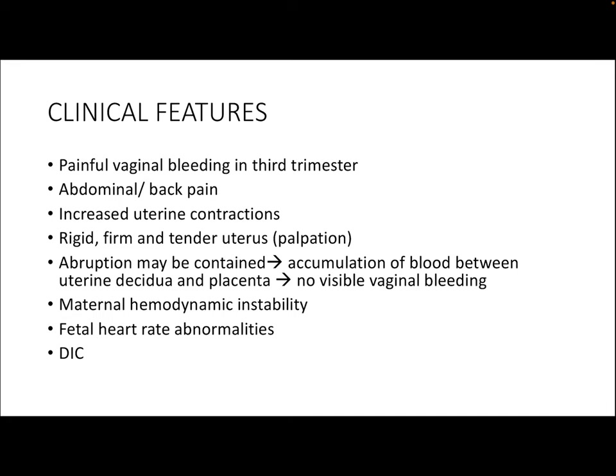In an arterial rupture there is high pressure bleeding concentrated at the center of the placenta, leading to a greater area of separation between the placenta and the decidua, and rapid development of symptoms like painful vaginal bleeding, DIC, and fetal heart rate abnormalities — a much worse scenario. In a venous rupture, it is a low volume, low pressure bleed at the periphery with smaller separation, causing less severe symptoms. However, this chronic bleed can eventually lead to long-term outcomes like growth restriction and oligohydramnios.